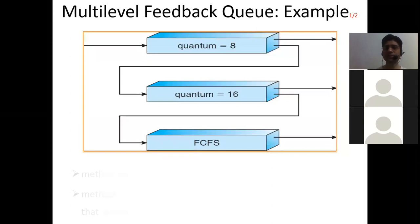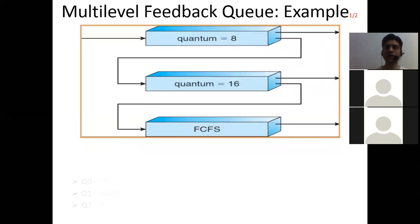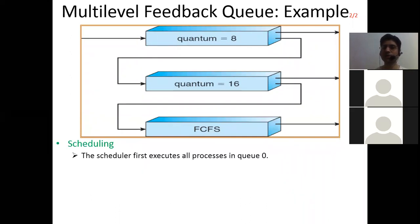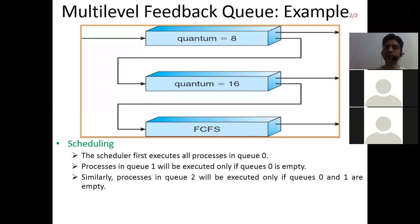Here is an example: suppose we are having three queues — Queue 0 with a time quantum of 8 milliseconds, Queue 1 with a time quantum of 16 milliseconds, and Queue 2 as FCFS. The scheduler first executes all processes in Queue 0. Then process in Queue 1 will be executed only if Queue 0 is empty, because Queue 1 has lesser priority than Queue 0.